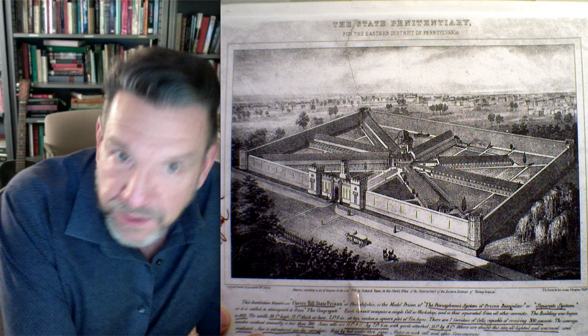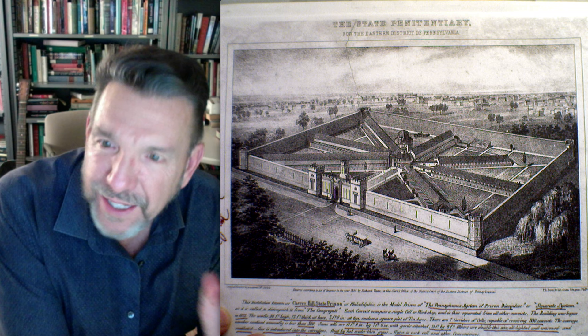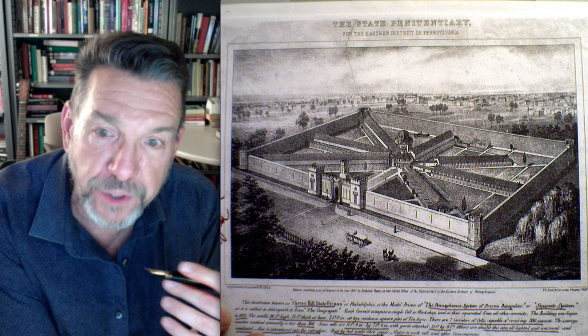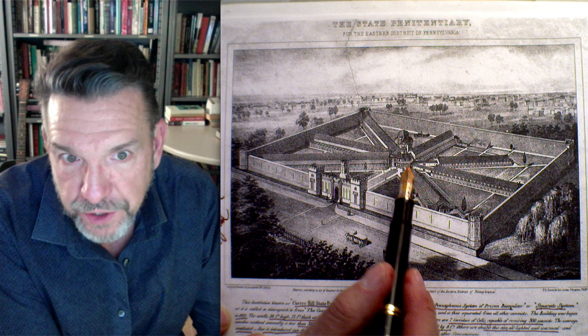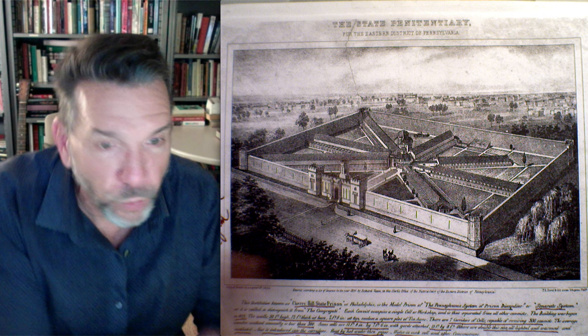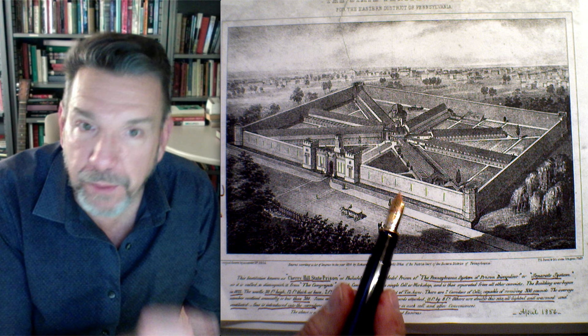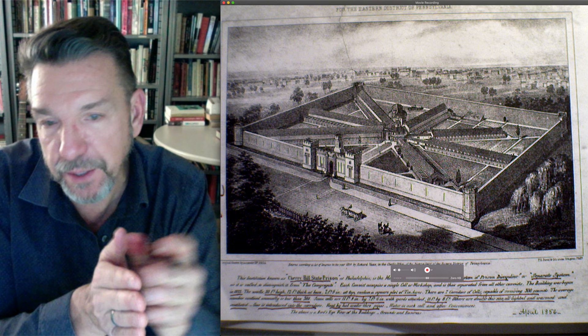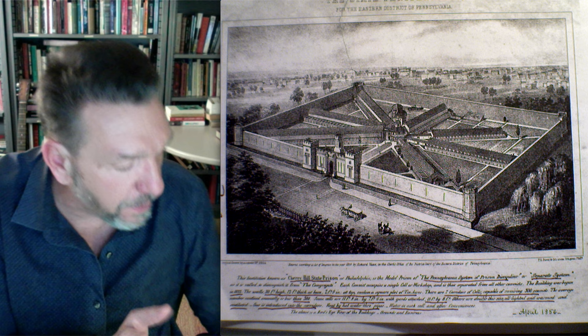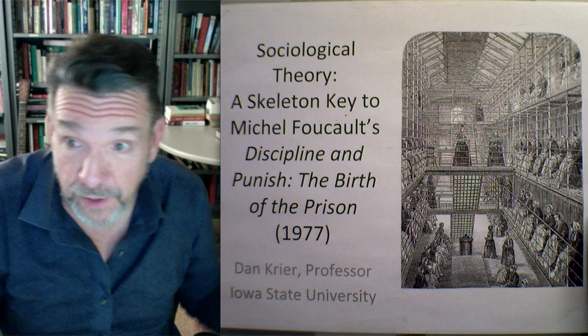The Pennsylvania prison is famous for instituting the separate system of prison discipline — to be distinguished from the congregate system. In the separate system, solitary separation was used not as punishment but as a therapeutic or reform move, along with features like work. You can see it has a panoptic structure: a central guard tower with radiating cell blocks, all ordered and organized. Everybody's in their place; it's easy to see those who are out of place. Classifications allow movement up and down the privilege system.